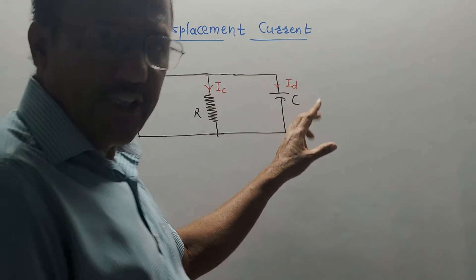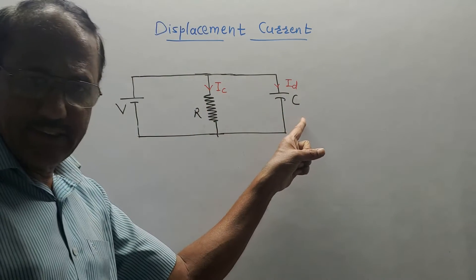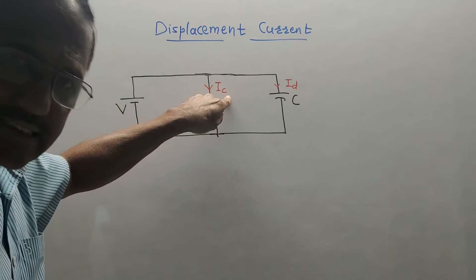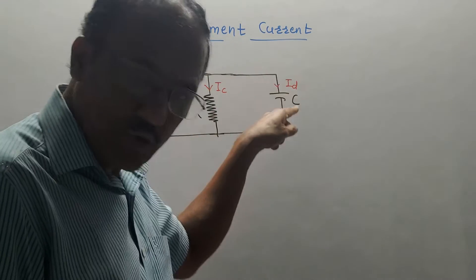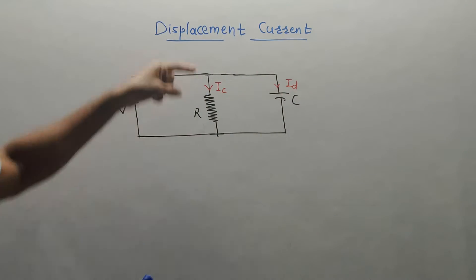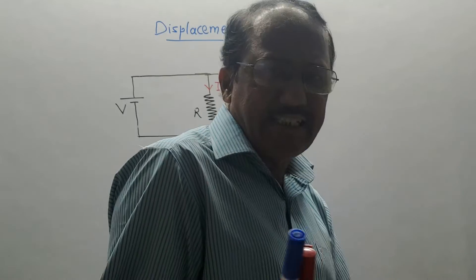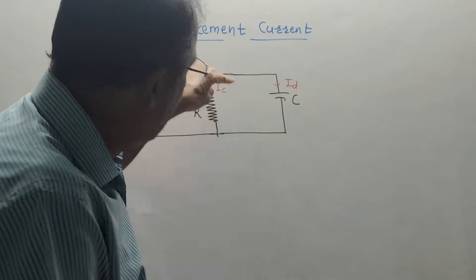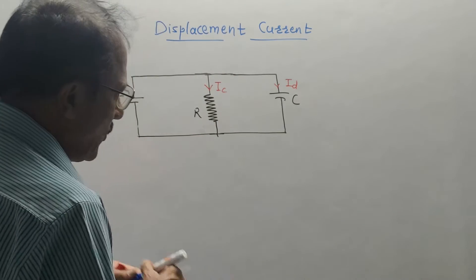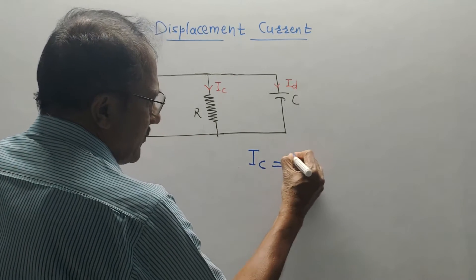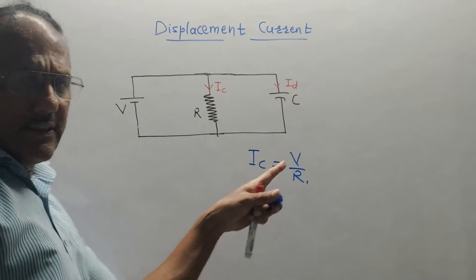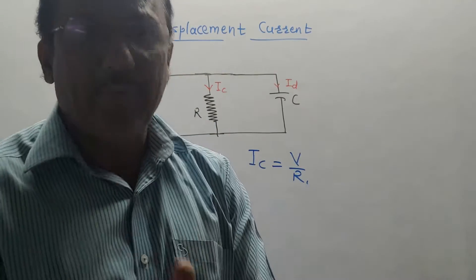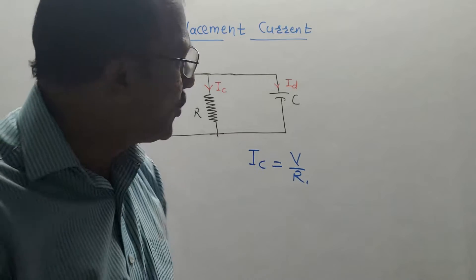Consider a simple RC circuit which consists of a resistor and capacitor. V is the supply voltage. Current passing through the resistor is denoted by IC, whereas current through the capacitor is denoted by ID. In the case of the resistor, the current passes due to the actual motion of charges, so it is called conduction current, denoted by IC. To calculate conduction current, we use Ohm's law: V upon R, where R is the value of resistance.